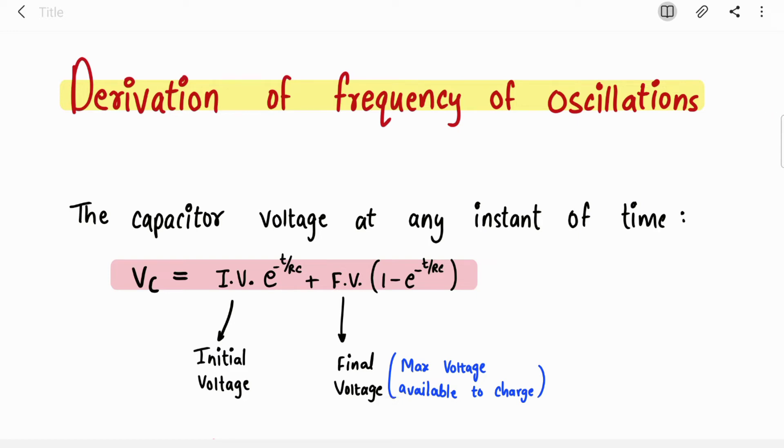The square wave is generated because the output oscillates, jumping between plus Vsat and minus Vsat. Why is this output bouncing? Because of the capacitor. The capacitor is charging and discharging, that's why the output is bouncing. So we have to start with the capacitor voltage to reach the frequency of oscillations.